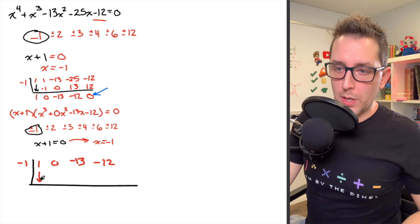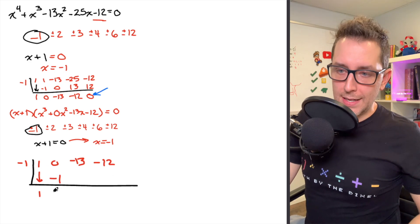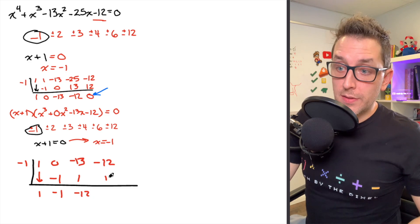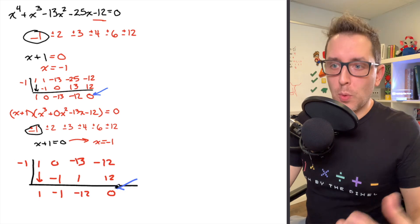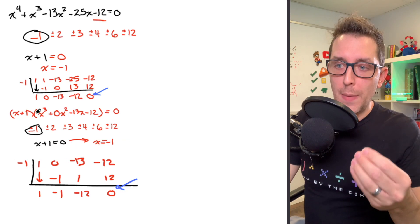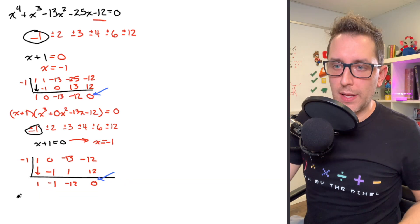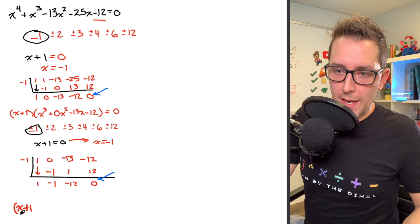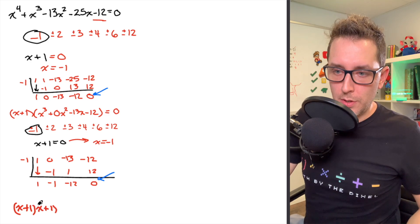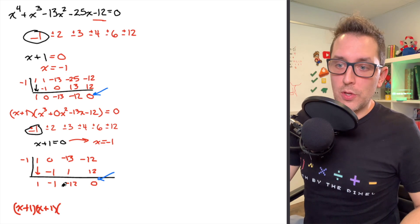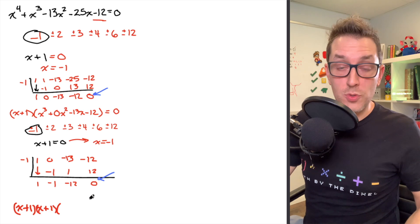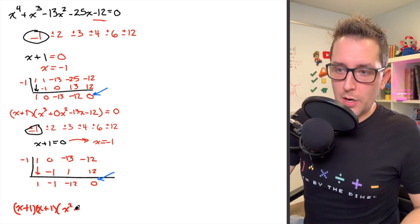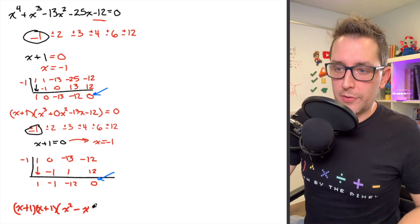Performing those same steps: bring the 1 down, multiply by negative 1, place the result, add straight down, multiply negative 1 by negative 1 to produce 1, continue adding straight down, and of course I get 0 again at the end. We had that first x plus 1 factor from our first synthetic division, and now we pull out another x plus 1 factor. In the next set of brackets, I place the result: coefficients 1, negative 1, and negative 12 give me a quadratic expression with an x squared term, an x term with coefficient negative 1, and constant negative 12.